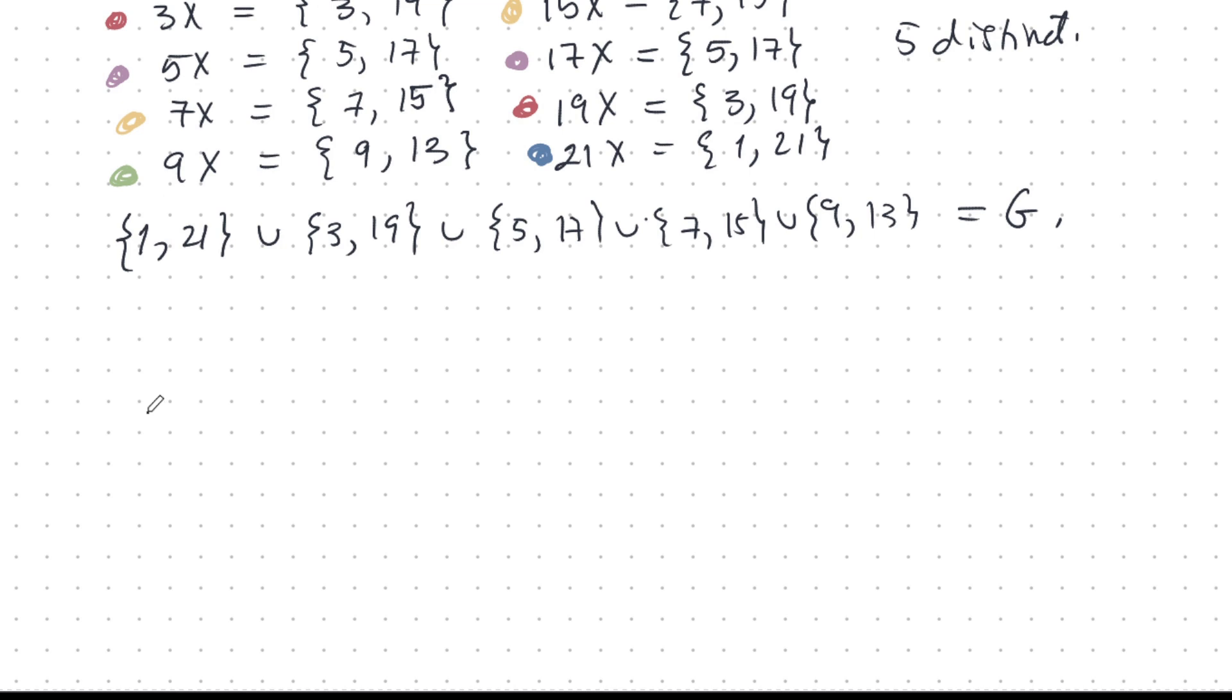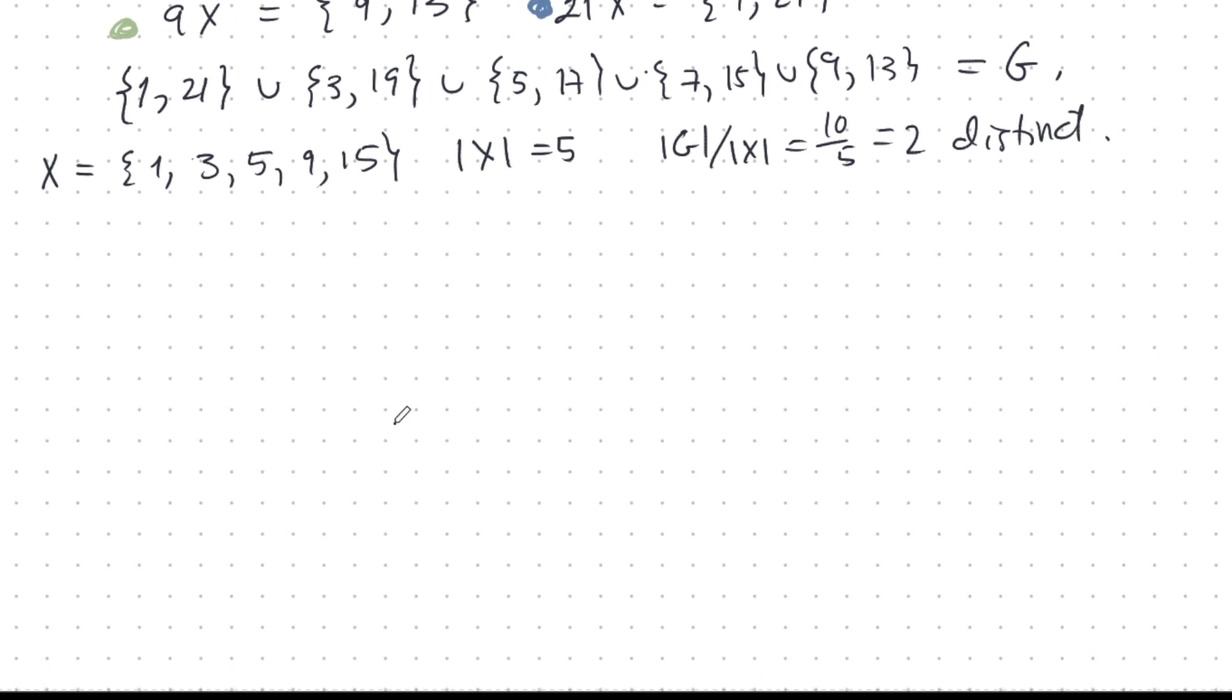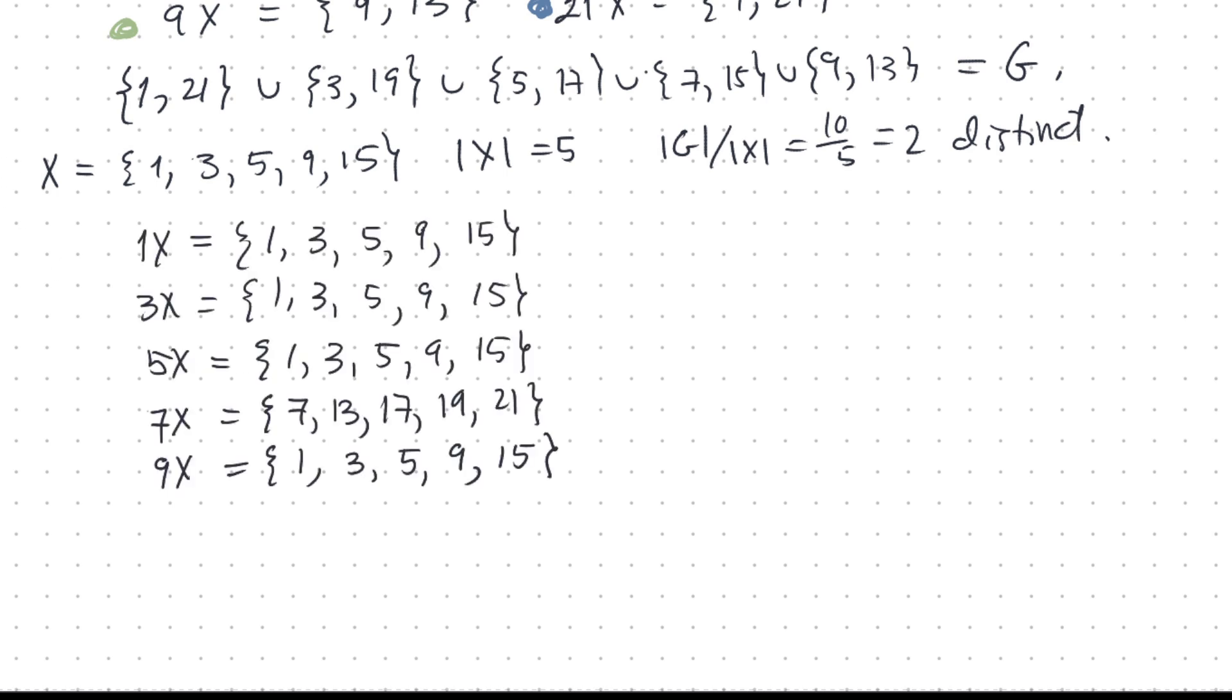So, now let's try the other one. X is 135, 915. The order of X is 5. So, what does this tell me? This tells me that order of G divided by order of X, that's 10. 10 divided by 5, that's 2. So, there will be two distinct cosets out of all of them. So, let me compute now all these cosets and show you. All right. This is what we have. I'll color code them. These are blue. They're all the same. Whereas, this one will make it red. This one's a bit different. Okay. Let's try the rest of them.